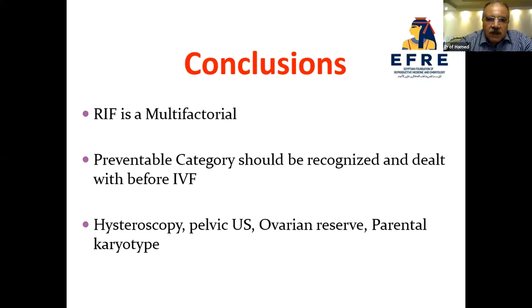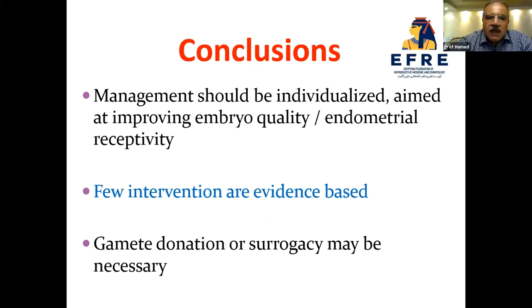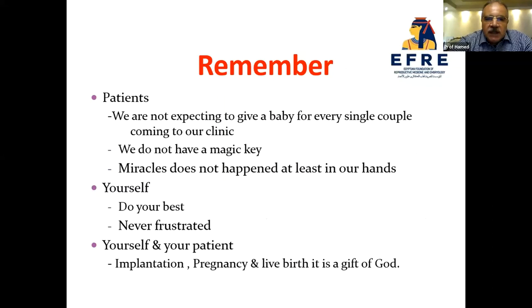In conclusion, RIF is a multifactorial condition. Preventable categories should be recognized and dealt with before IVF. Hysteroscopy, pelvic ultrasound, ovarian reserve testing, and parental karyotyping are needed as investigations. Management should be individualized, aimed at improving sperm, oocyte, embryo quality, and endometrial receptivity. Very few interventions are evidence-based. Gamete donation or surrogacy may be necessary.